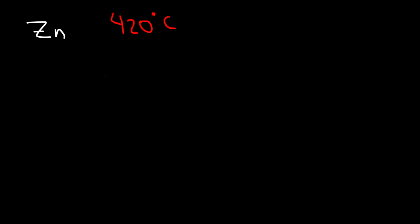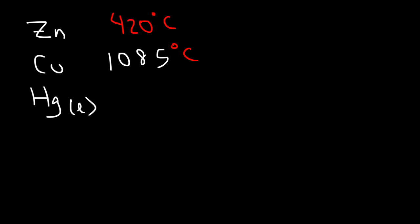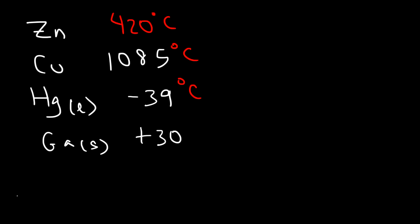The melting points of metals can vary greatly. Zinc has a relatively low melting point for a metal, at about 420 degrees Celsius. Copper metal has a much higher melting point of about 1085 or 1086 degrees Celsius. Mercury is a liquid at room temperature, with a melting point of about negative 38 or negative 39 degrees Celsius. Gallium is a solid at room temperature but can easily melt with a small amount of heat — its melting point is only about 30 degrees Celsius. Most metals have very high melting points; for example, tungsten has a melting point of roughly 3400 degrees Celsius.